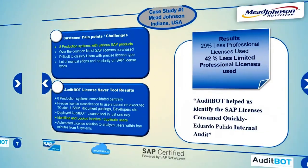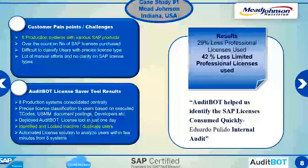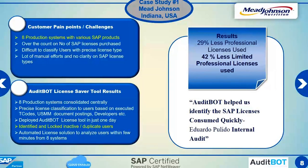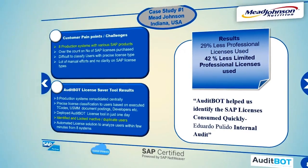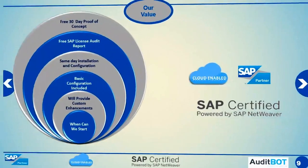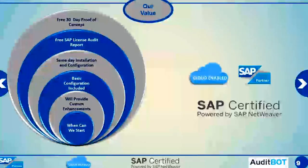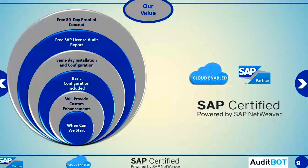Here is a sample case study where we were able to reduce 29% on the professional licenses and 42% on the limited professional licenses. We can perform a free 30-day proof-of-concept installation. All the configuration is included and we do all the heavy lifting. We are also open to customer enhancements.